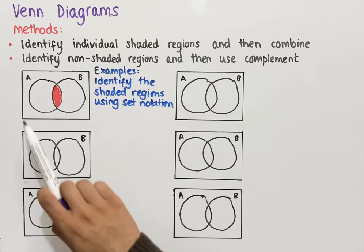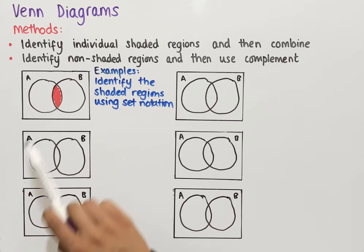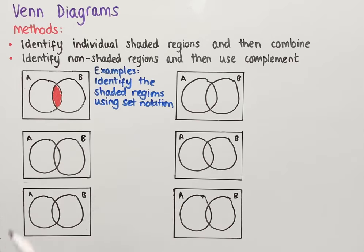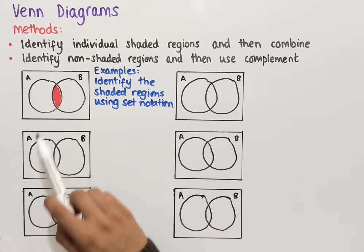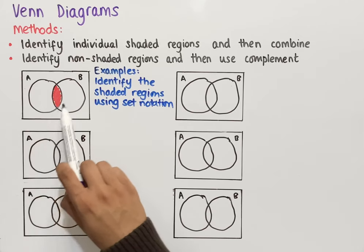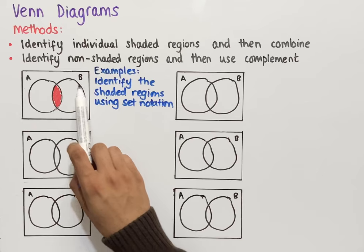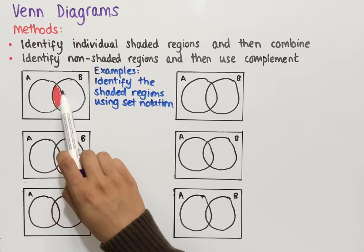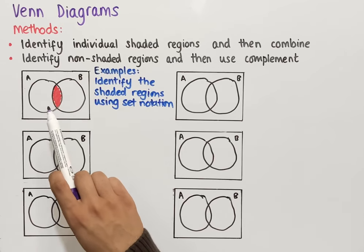In the first example we have a Venn diagram with a region shaded in, and we're trying to identify using set notation what that shaded region is. The first thing we notice is that the shaded region is part of circle A and also part of circle B, and this specific shaded region might be one of the more obvious ones.